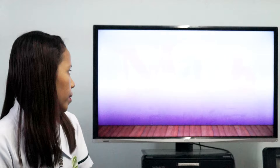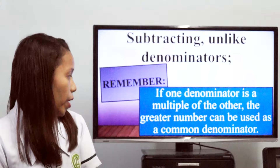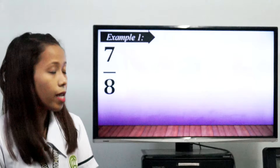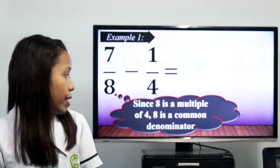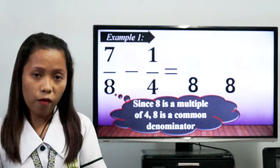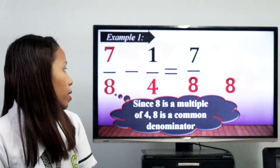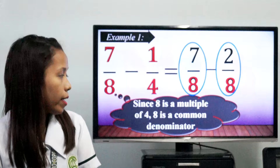Now let's proceed in subtracting fractions with unlike denominators. Remember, if one denominator is a multiple of the other, the greater number can be used as a common denominator. For example, 7/8 minus 1/4. Since 8 is a multiple of 4, 8 is the common denominator. 8 divided by 8 equals 1, times 7 equals 7. And 8 divided by 4 equals 2, times 1 equals 2. So 7/8 minus 2/8 is equals to 5 over 8.